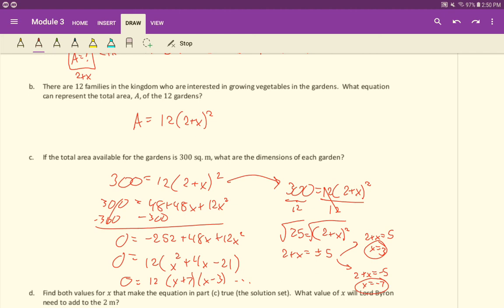Now, do both of these answers make sense in the context of the problem? No. Which one doesn't make sense? The negative 7. Why doesn't the negative 7 make sense? Well, it doesn't make sense to have a negative dimension. Now, we've got to be careful here. The dimension of the garden is not negative 7. The dimension of the garden is going to be 2+x. So it would really be -7+2, which is still negative 5. So that one's no good. We'll throw that answer out.